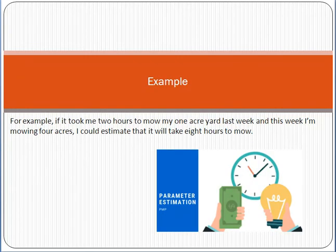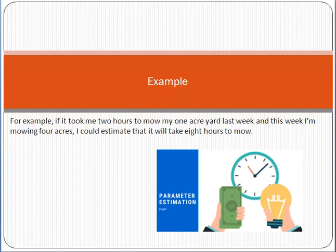For example, it took me two hours to mow my one-acre yard last week, and this week I am mowing four acres. So, 2 multiplied by 4 equals 8 hours. The unit is: for 1 acre, 2 hours are required. So for 4 acres, 8 hours will be required. This is the concept of parametric estimation.